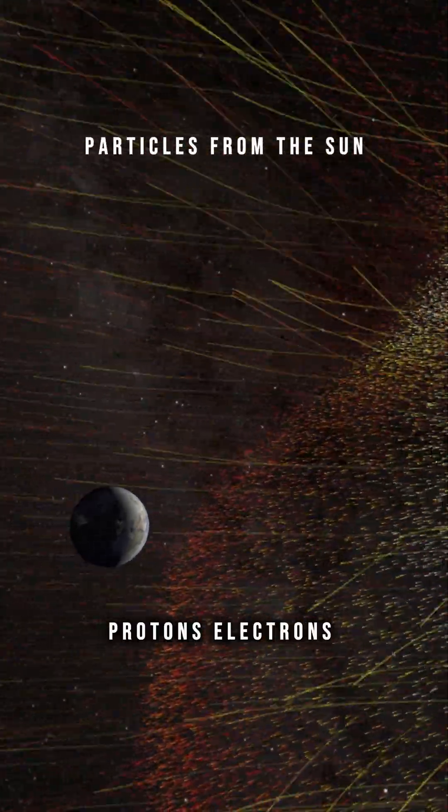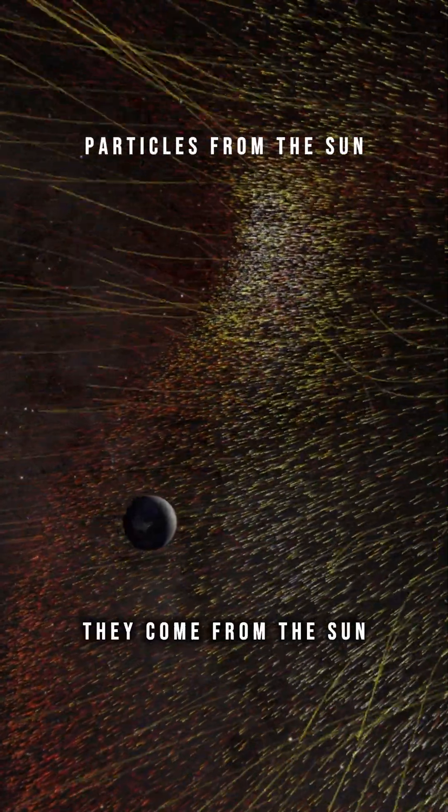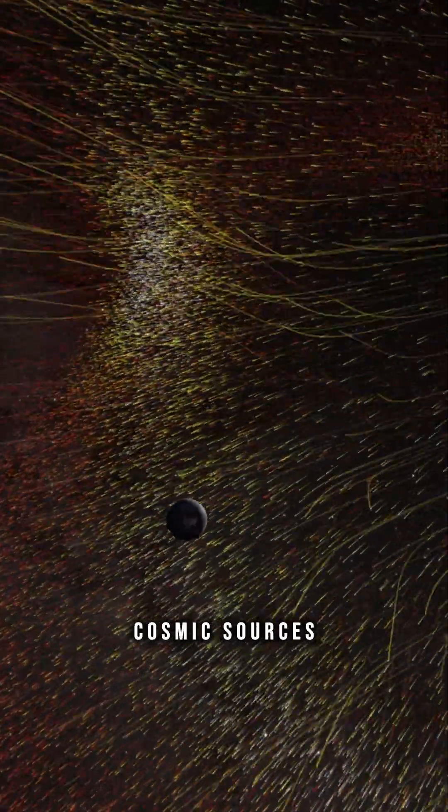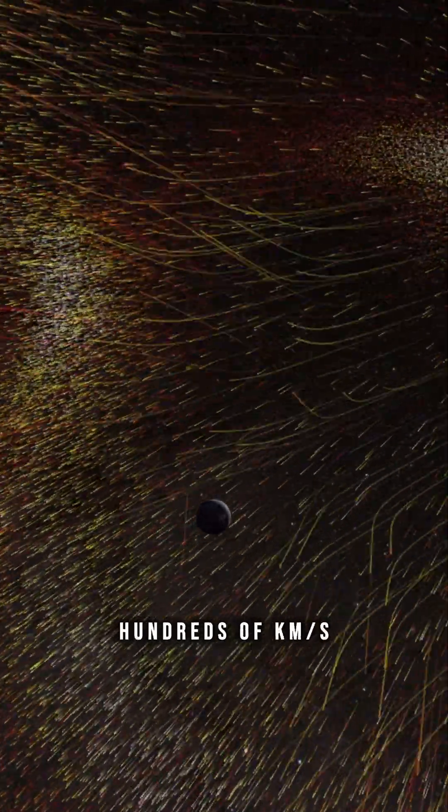Start with particles: protons, electrons, and ions. They come from the sun, they come from cosmic sources, and they move at hundreds of kilometers per second.